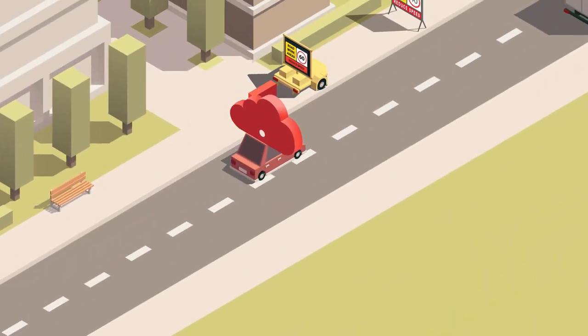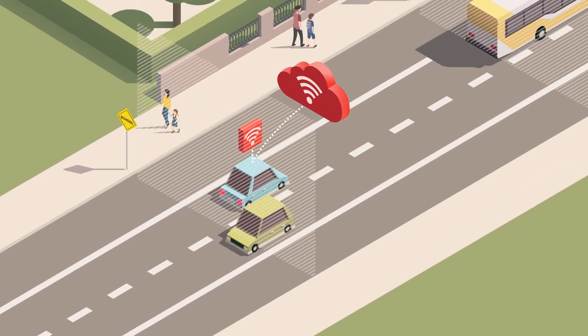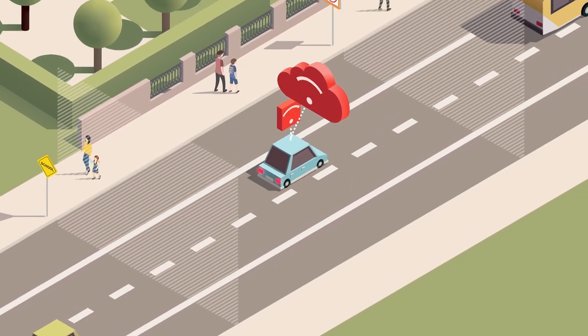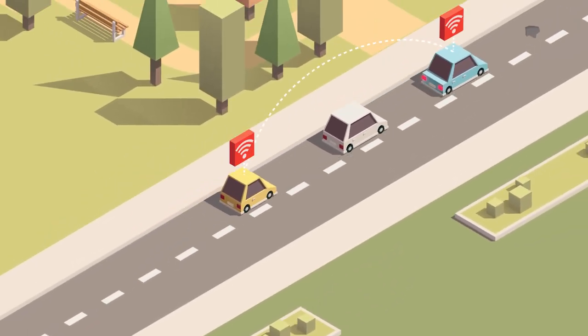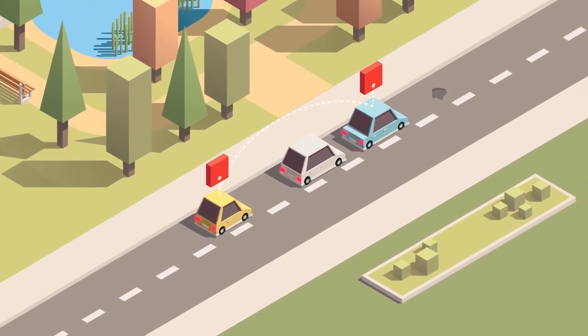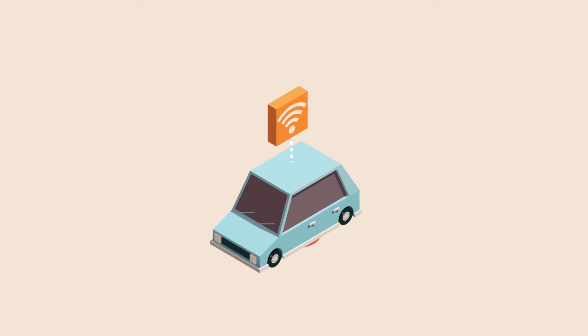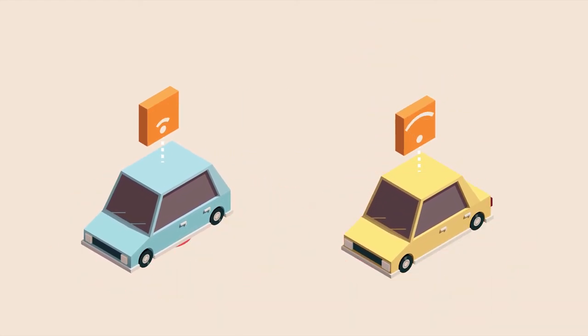These warnings could include information about upcoming roadworks or a change in variable speed limit via vehicle-to-infrastructure communication, and can also receive vehicle-to-vehicle warnings about the behaviour of other drivers, like another vehicle braking heavily ahead. Co-operative vehicles provide drivers with 360 degree awareness of similarly equipped vehicles and infrastructure.